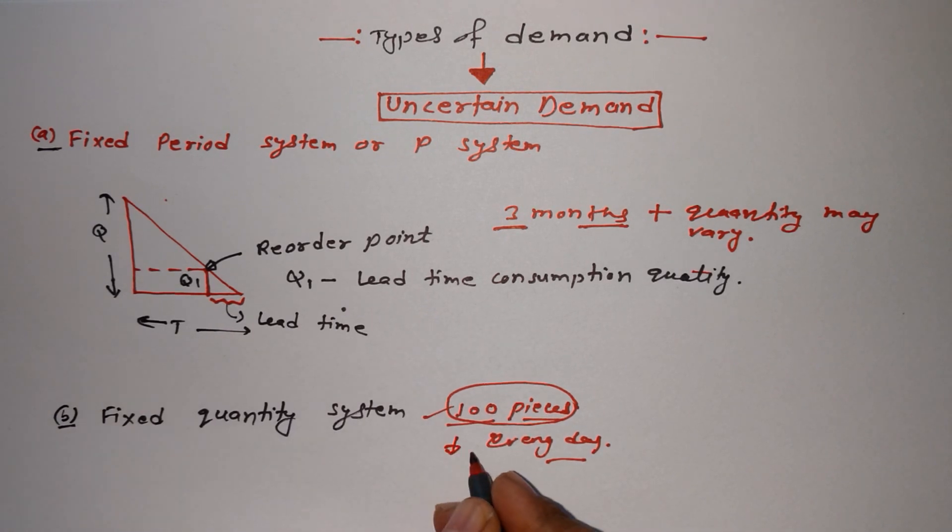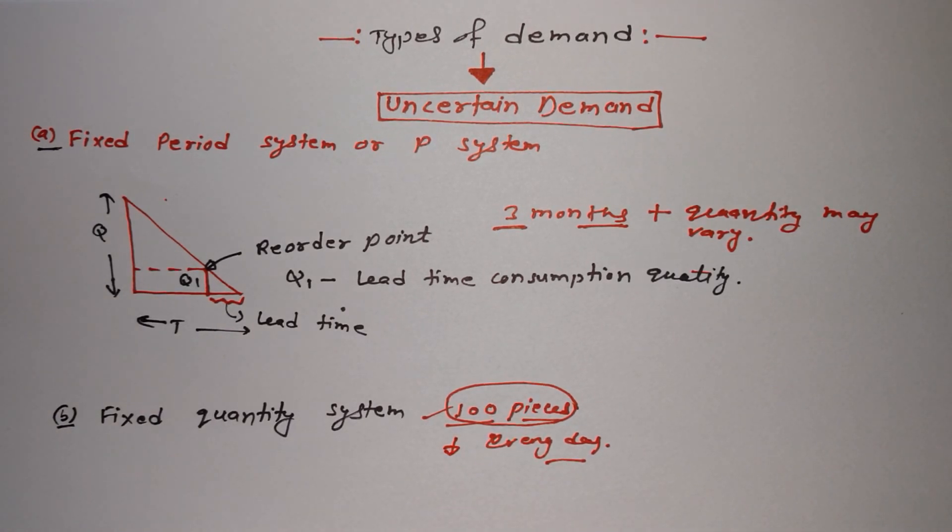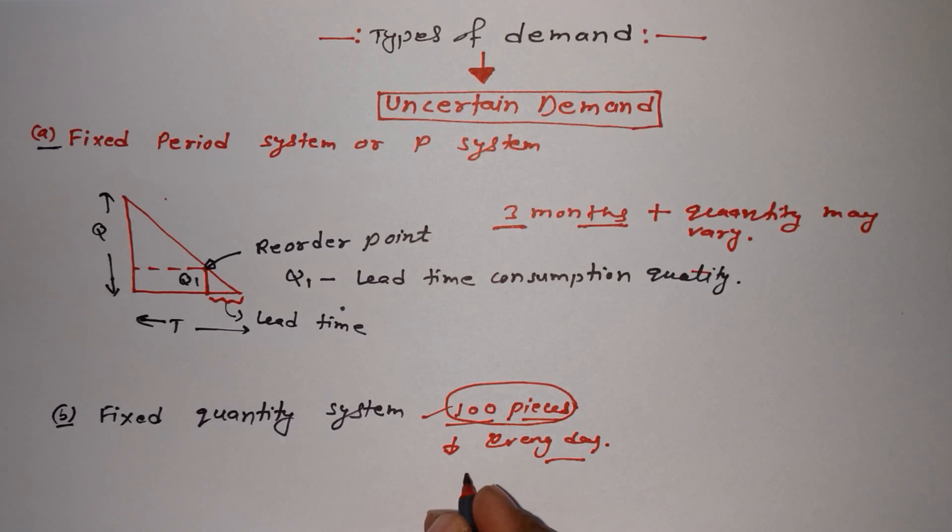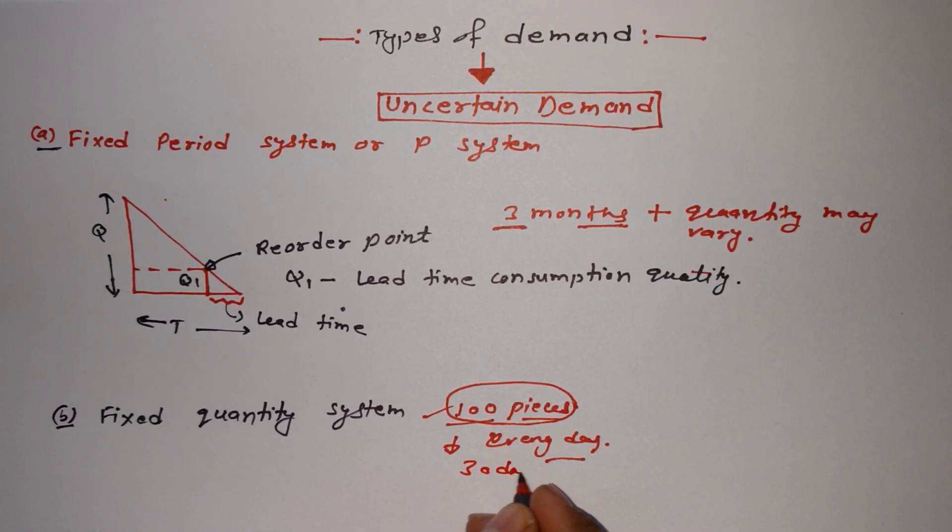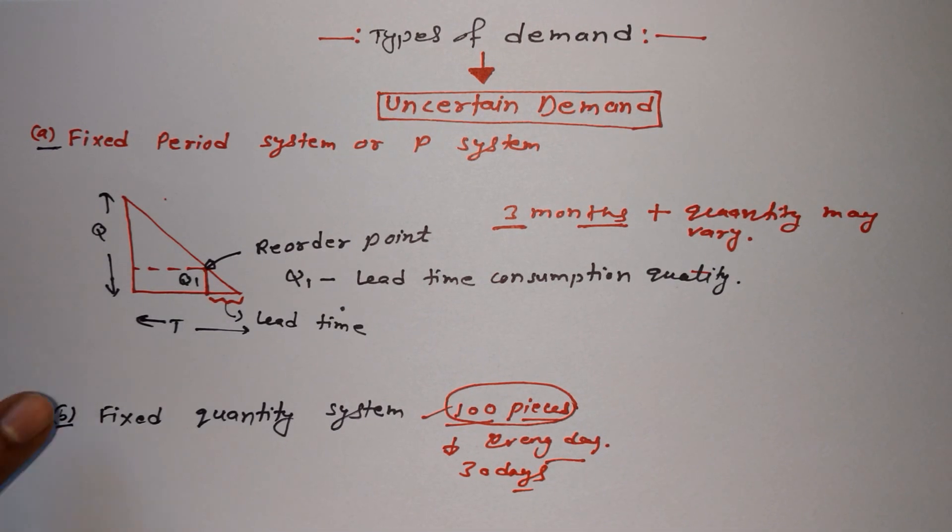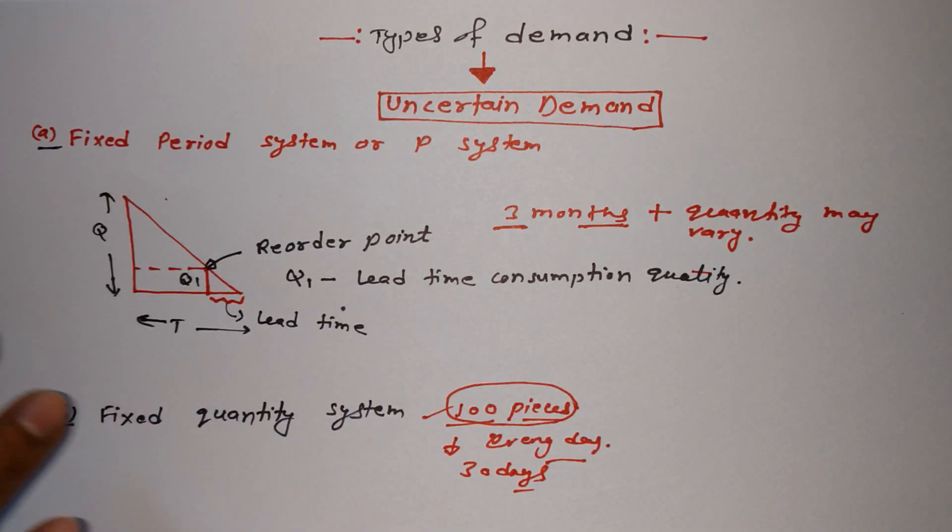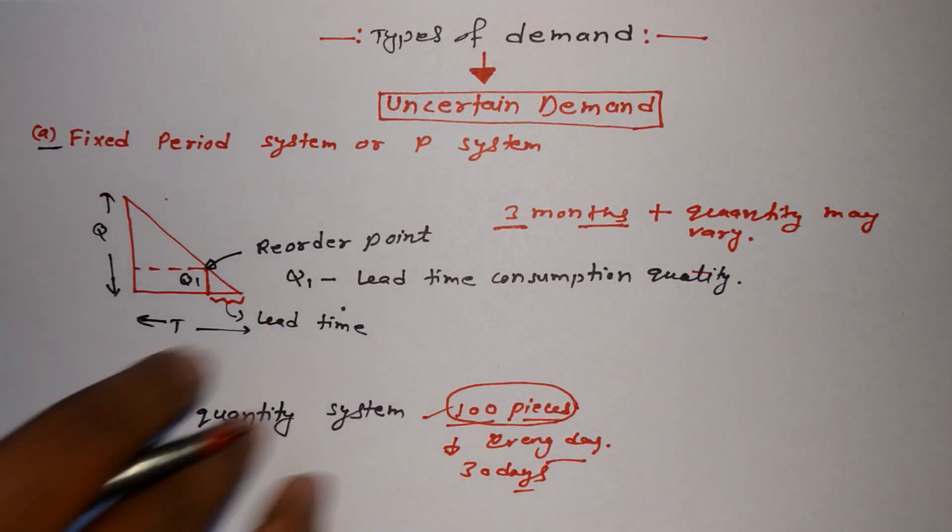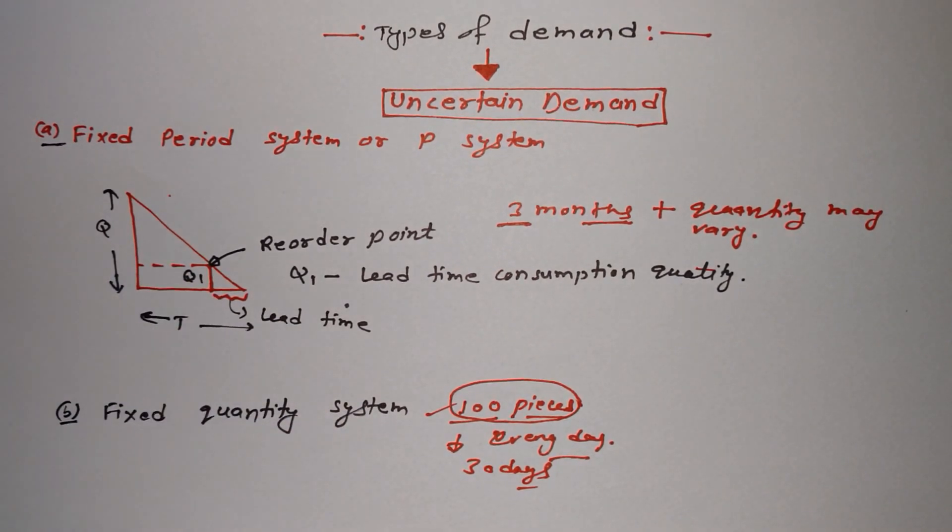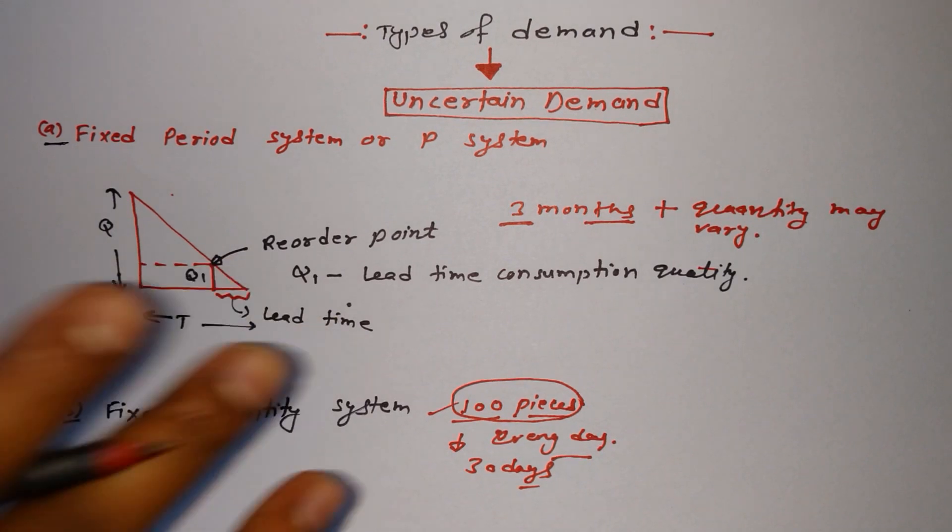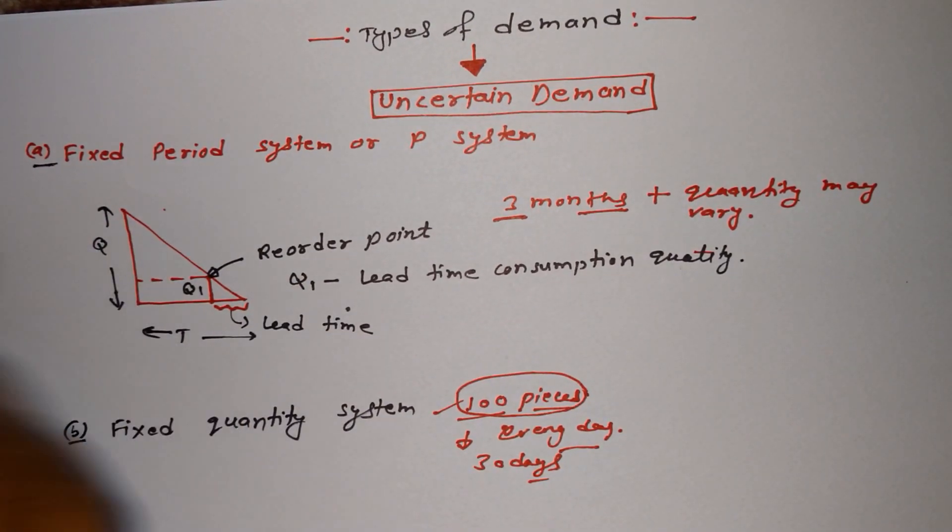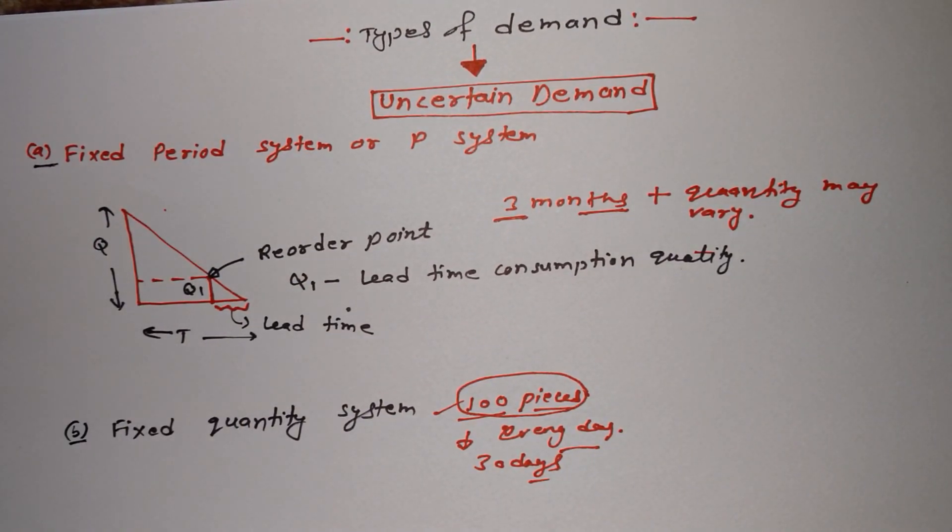Maybe in the dull season, when the market condition is not good, we may even order 30 pieces in 30 days. So this is all about two types of uncertain demand, and all these things come under inventory. I hope you understand this topic uncertain demand and about this diagram. See you soon in my next video. Thanks for watching.